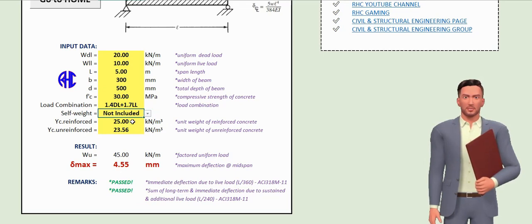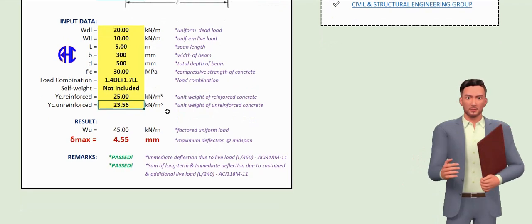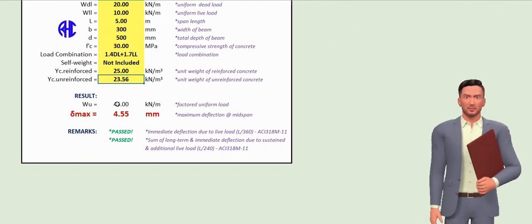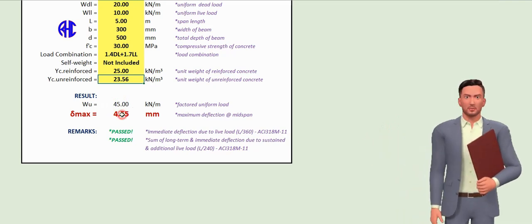Also, you can input the modified unit weight of the concrete for both reinforced and unreinforced concrete beams. Under the result, you can see the computed factored uniform load and the maximum deflection depending on the type of beam support.